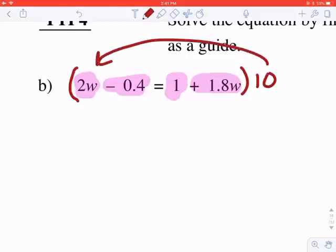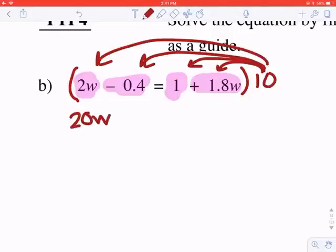I'm going to go ahead and distribute that 10 out to each of these. 10 times 2w is 20w. You just multiply 2 times 10 and stick the w on there. Negative 0.4 times 10. I do one swoop. So it's going to be negative 4. 1 times 10 is 10. 1.8, I need one swoop. And that's going to be 18w.